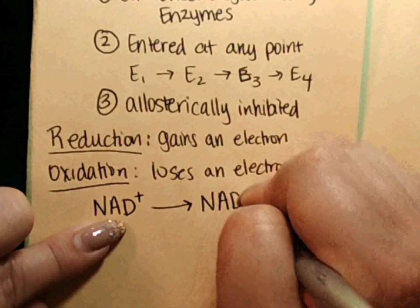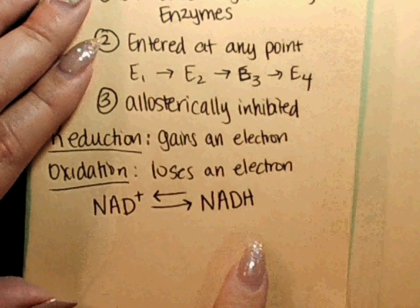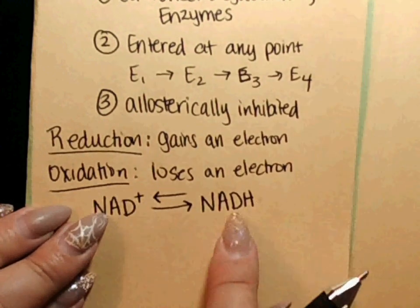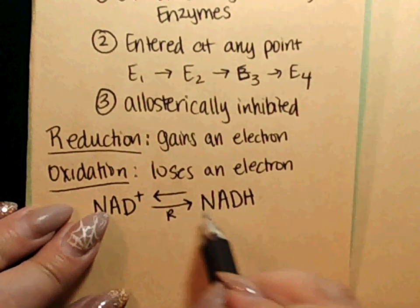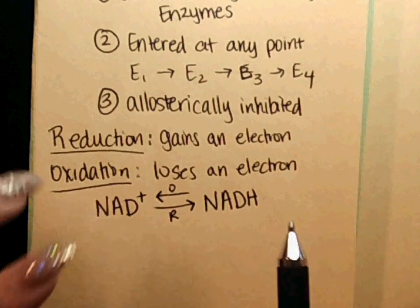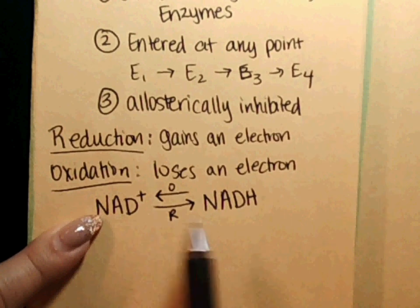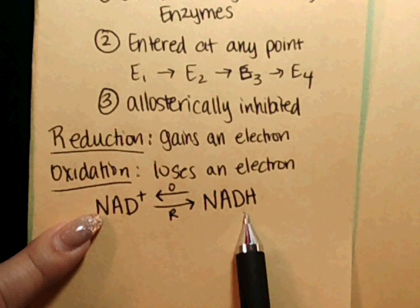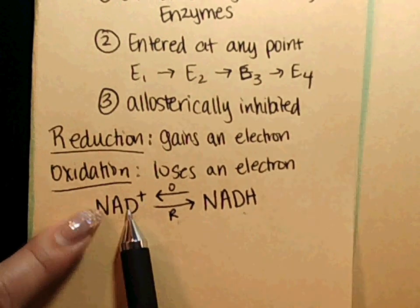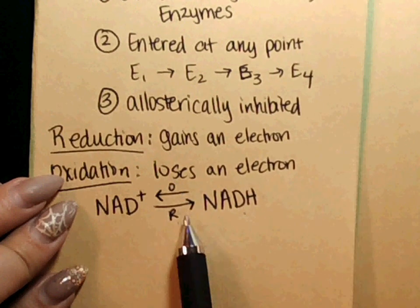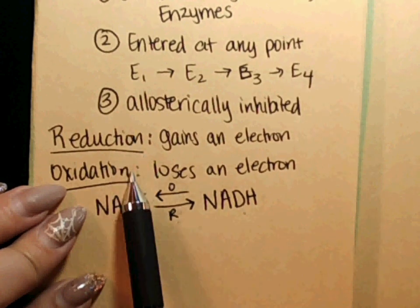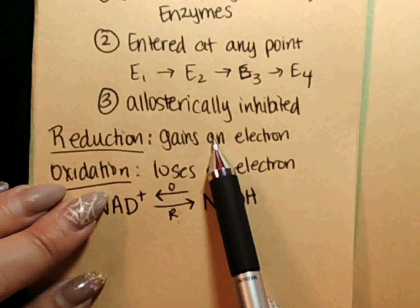When NAD+ gains an electron it also gains a proton, becoming NADH. This process is reversible. NAD+ gains hydrogen and is reduced (R), and NADH loses the electron through oxidation (O). This is very vocabulary-specific: on a free-response question, simply saying 'NAD+ becomes NADH' is counted wrong. You must say 'NAD+ is reduced to NADH' and 'NADH is oxidized back to NAD+.' You cannot have reduction without oxidation — both must occur simultaneously.